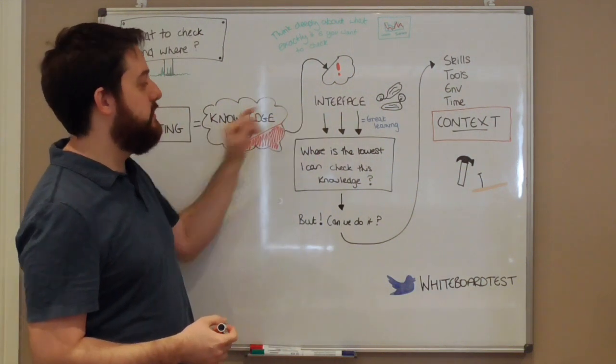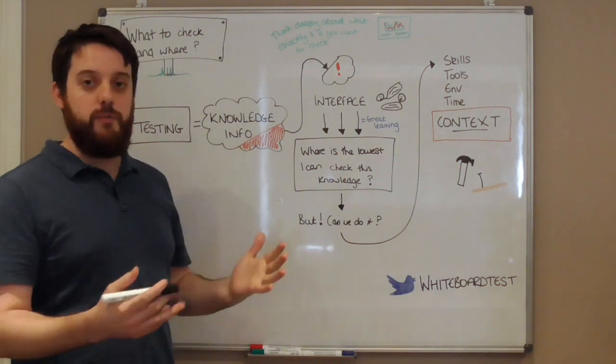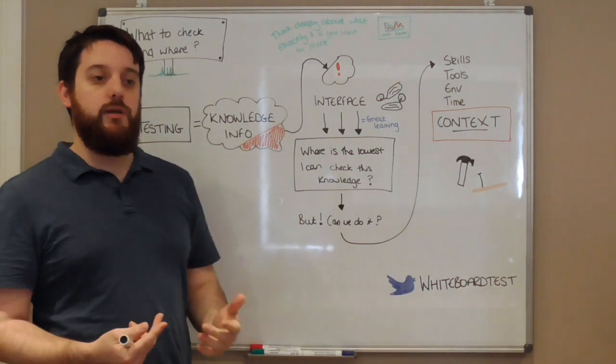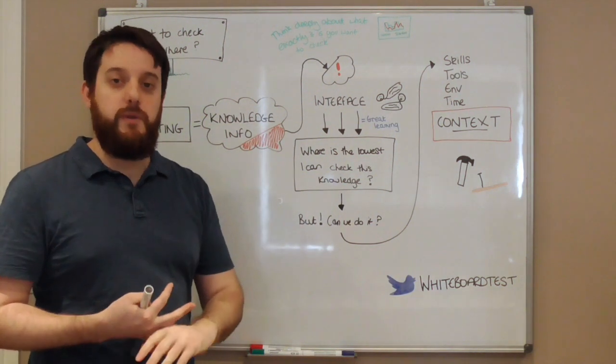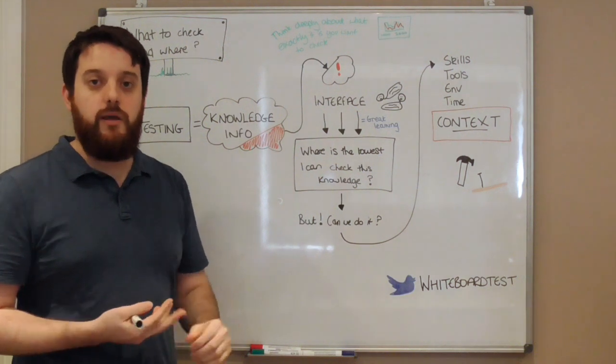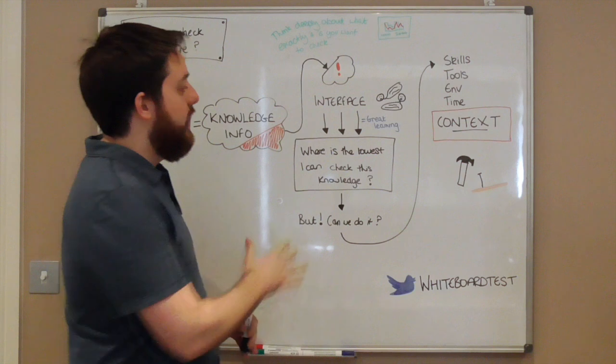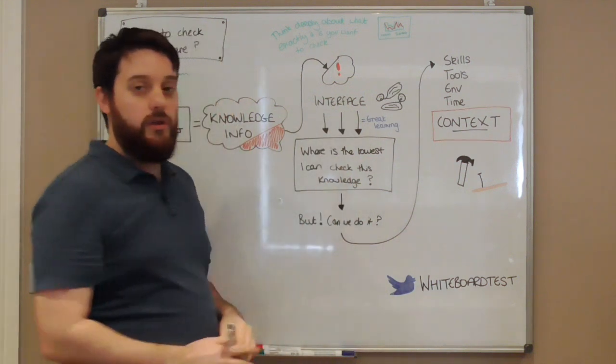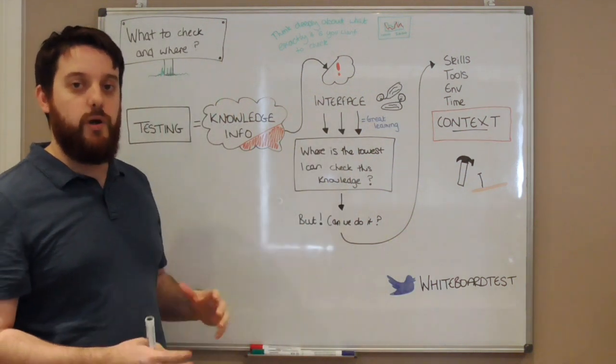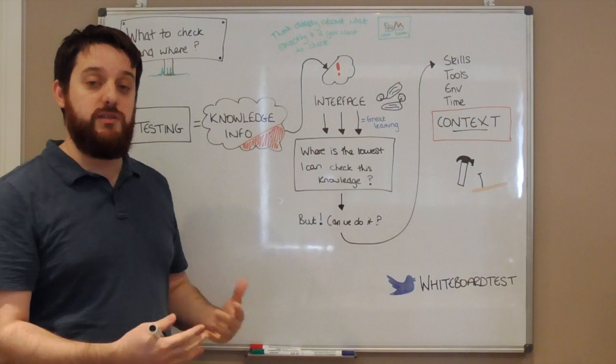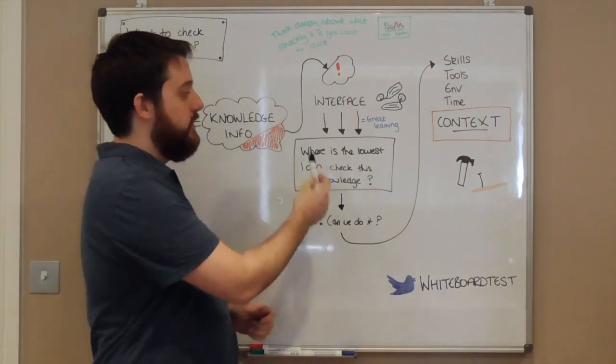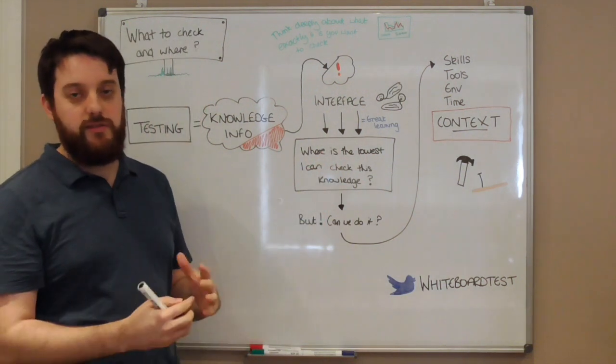The majority of the time, this testing over here is done at some interface. That could be a UI, it could be an API, it could be a class, it could be anything. But we've established this information at some interface. Now we need to see if we can go down to find another location where this information is still checkable. And if you've never done this before, this is fantastic learning.